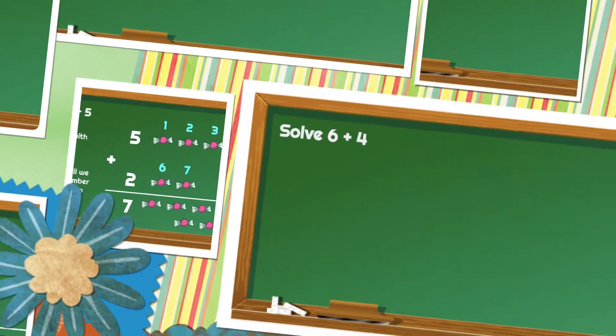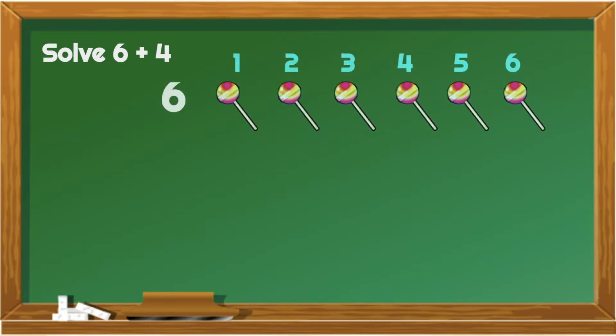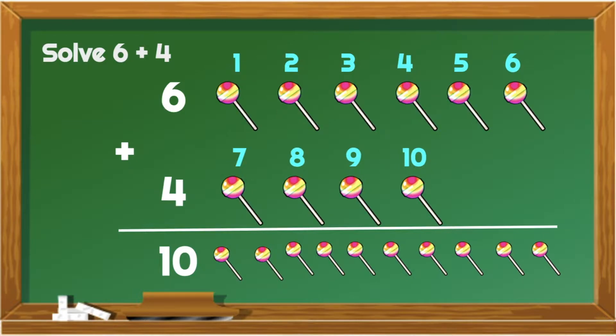Marvelous! For our next example, it's 6 plus 4. Again, let's start with the bigger number, which is 6. We need to add 4. So, let's continue counting. 7, 8, 9, 10. 6 lollipops plus 4 lollipops is equal to 10 lollipops.